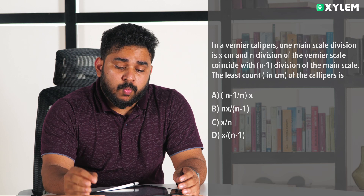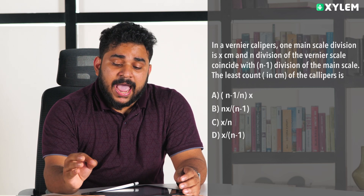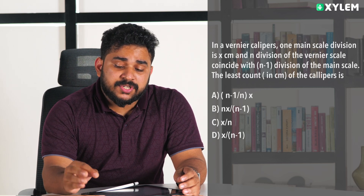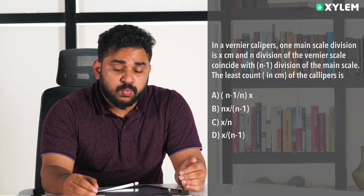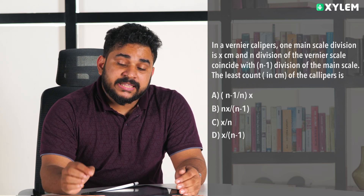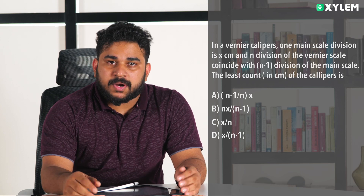Vernier Caliper is an important topic. A typical question involves the least count. In Vernier Calipers, one main scale division is x cm, and n divisions of the Vernier scale coincide with n-1 divisions of the main scale. We need to find the least count of the caliper in centimeters.